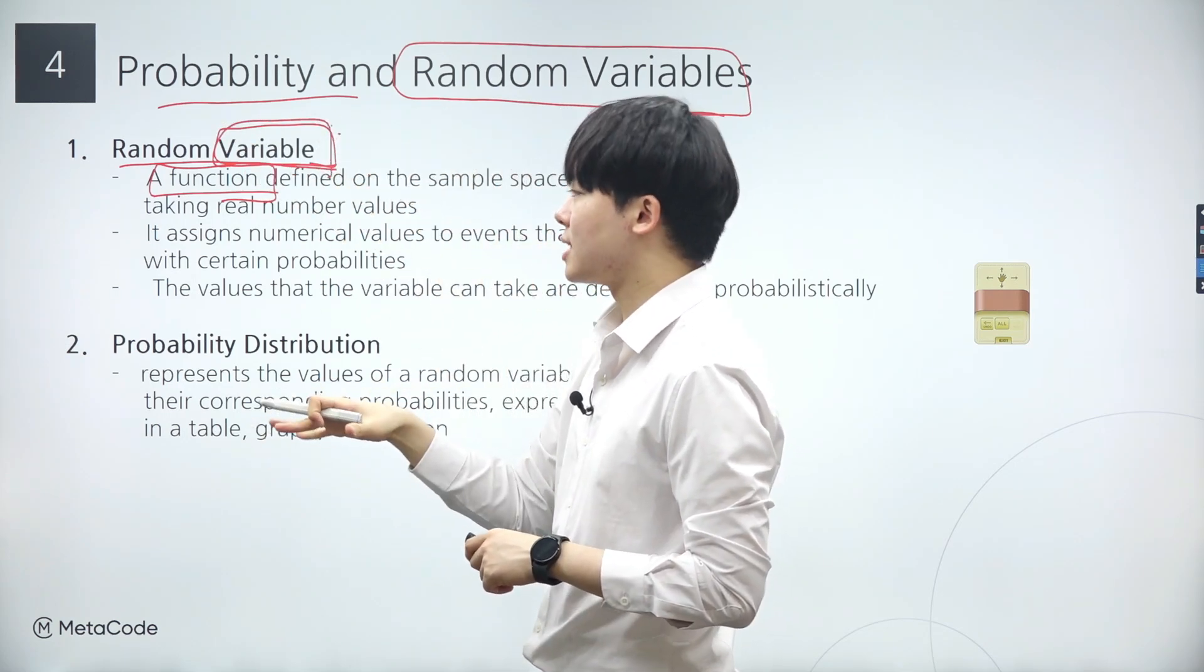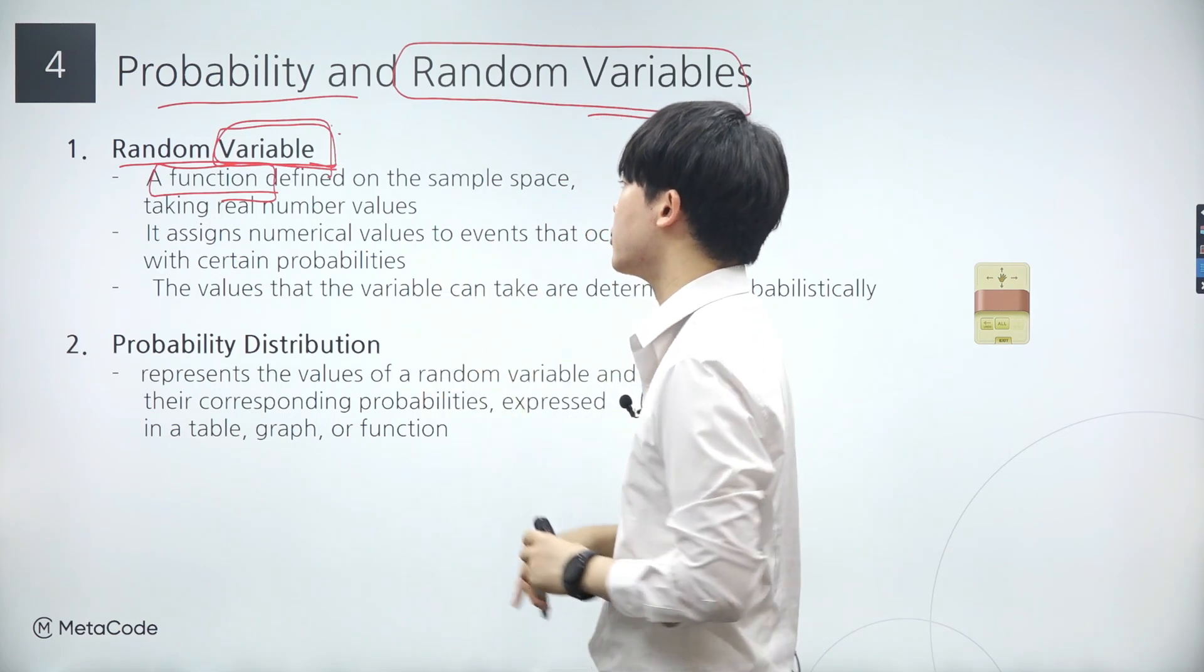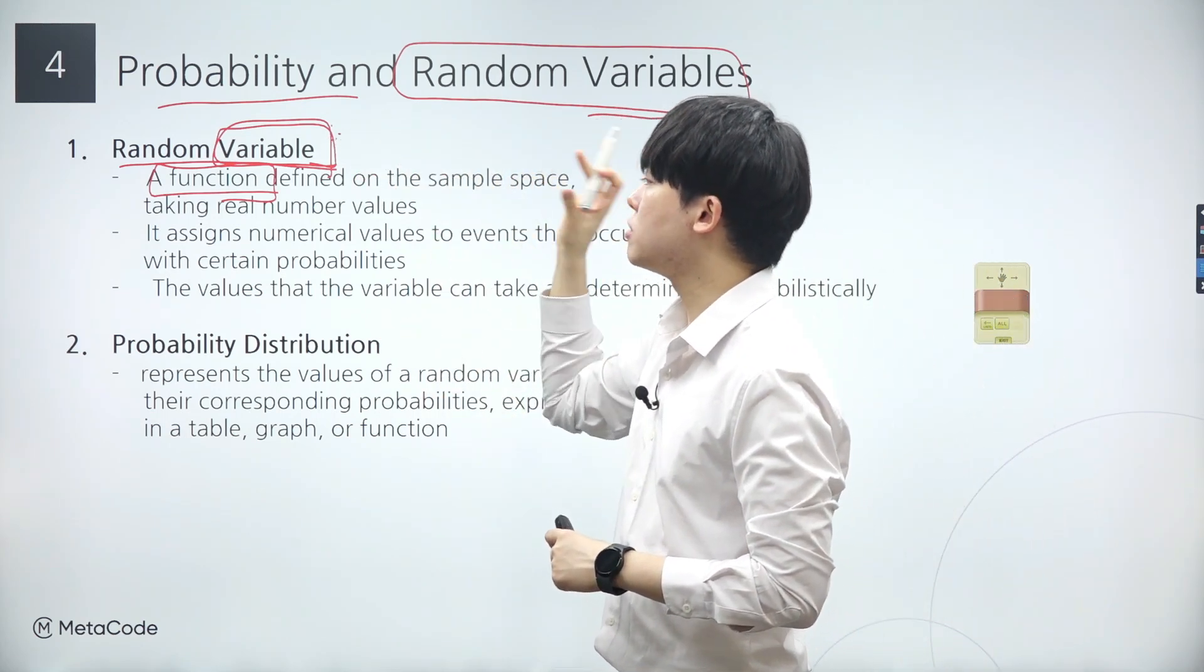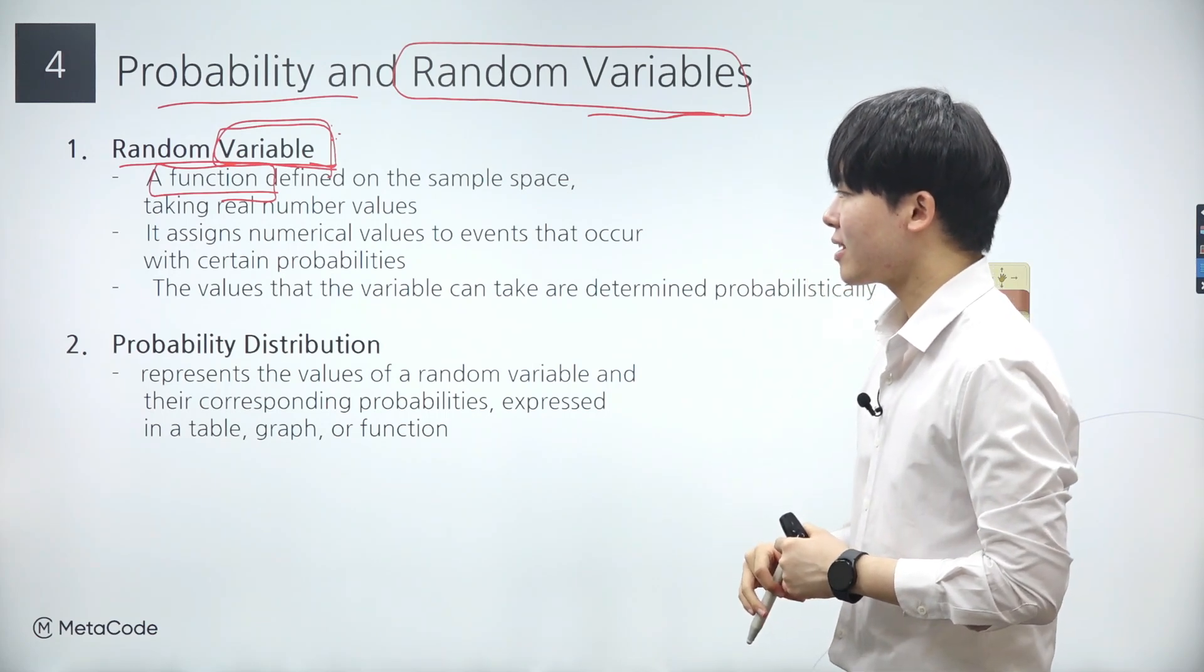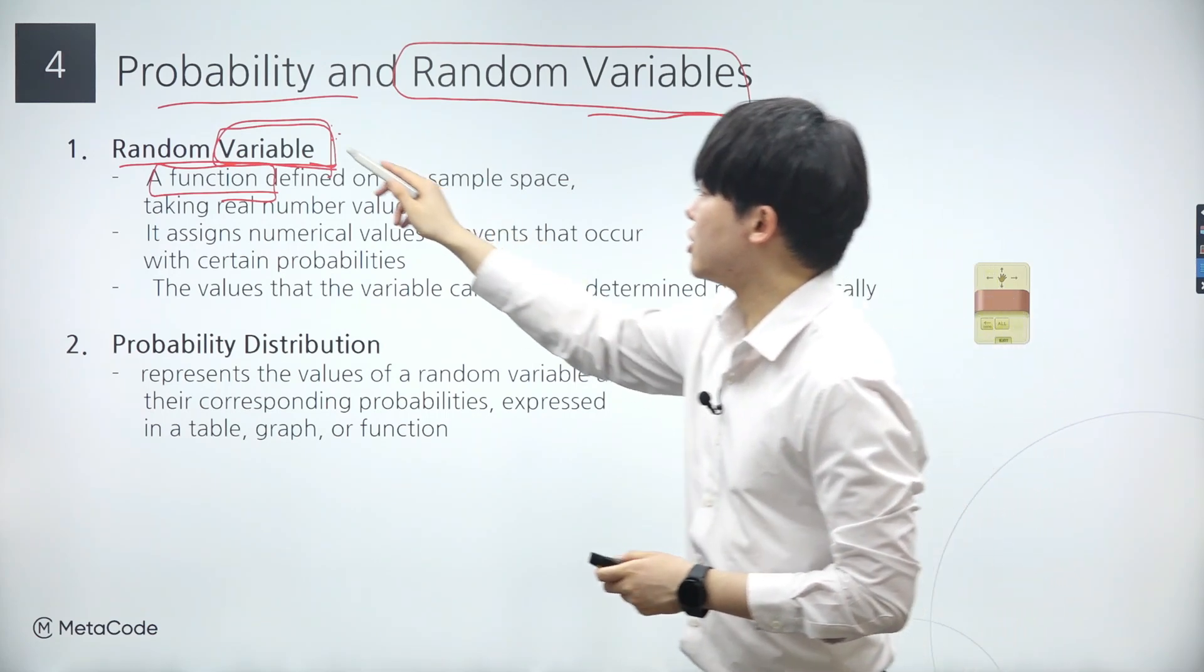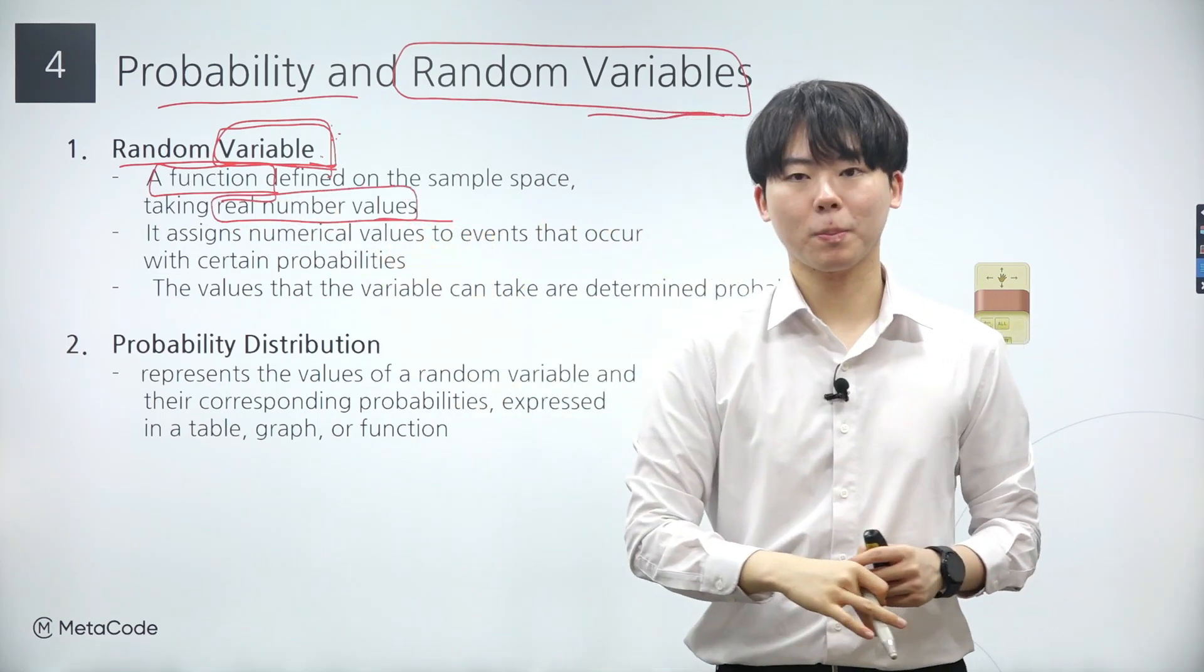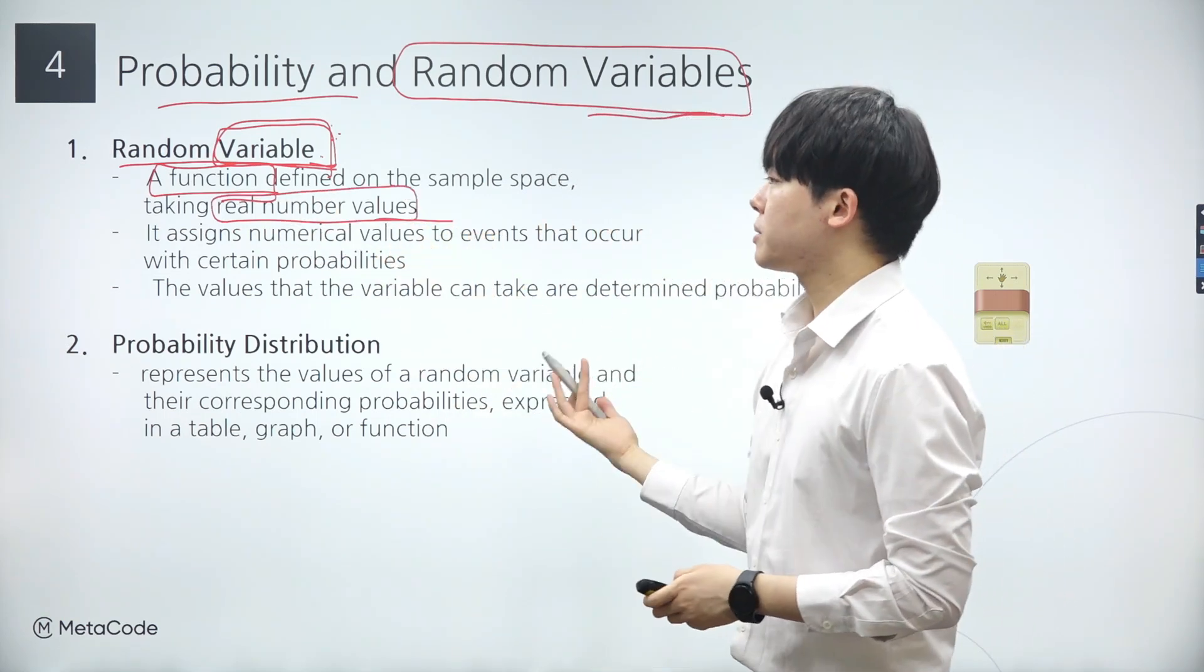Now what do you mean by input and output in the context of a random variable? Well, the output of a random variable is essentially a real value, while the input represents an event. So in other words, a random variable transforms an event into a real number.